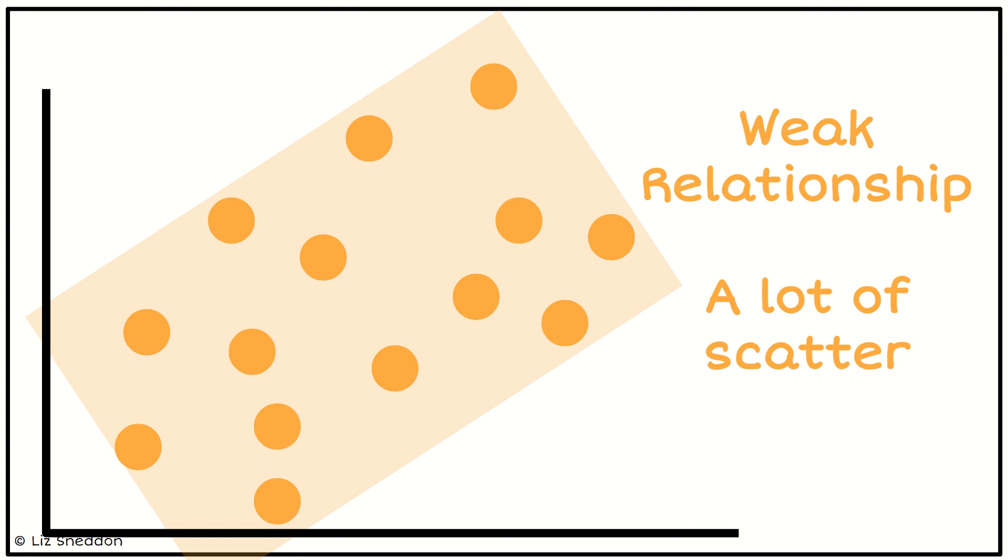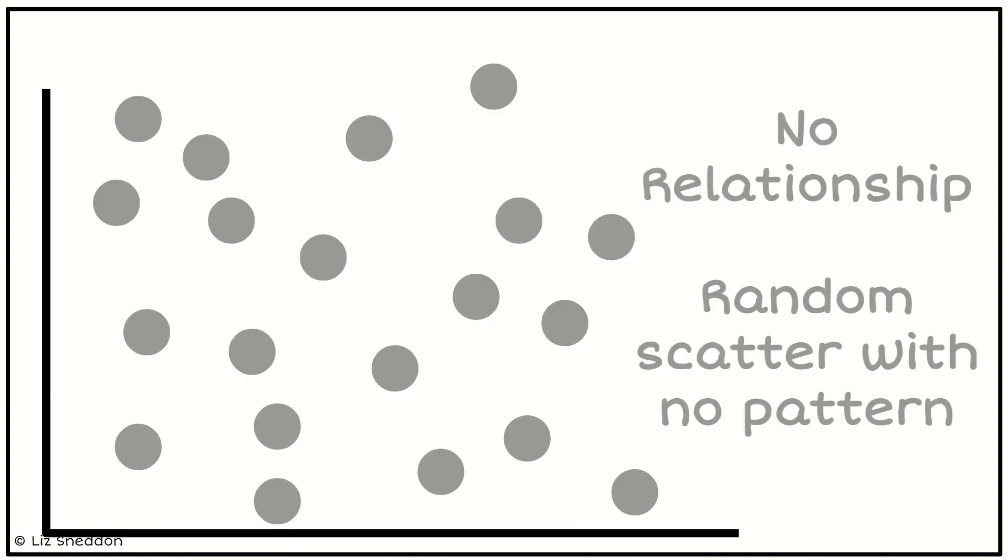Notice that there's still areas here on the graph where there isn't any data, and so this is how I know that it's a weak relationship, not a no relationship, because that's important to distinguish between those two. This is what a no relationship would look like, as I haven't got any areas where there's no data whatsoever.